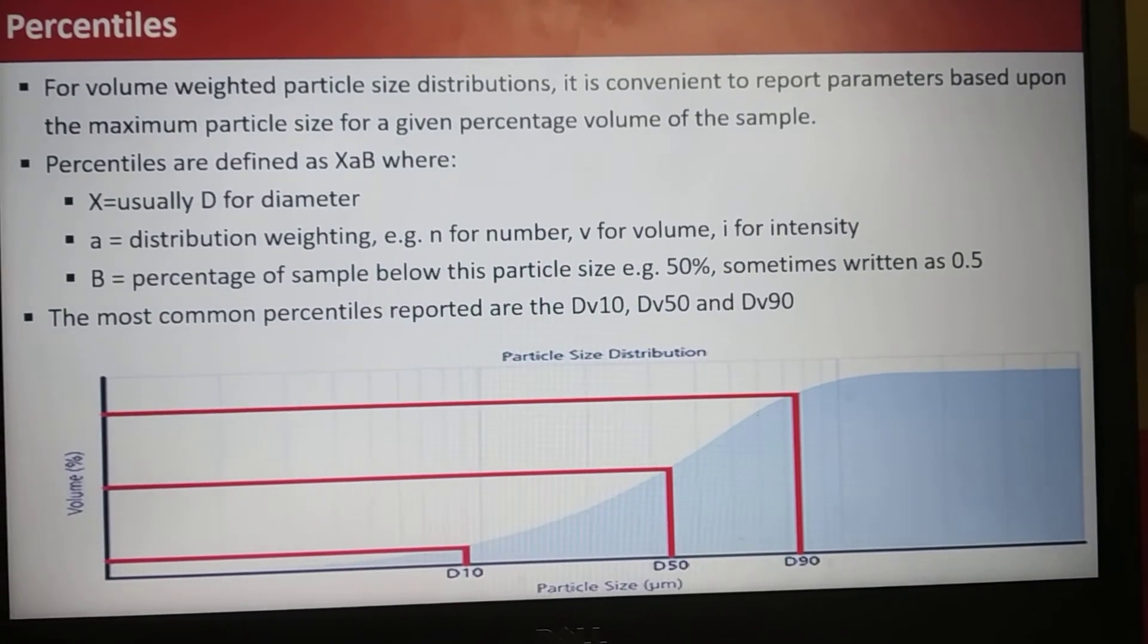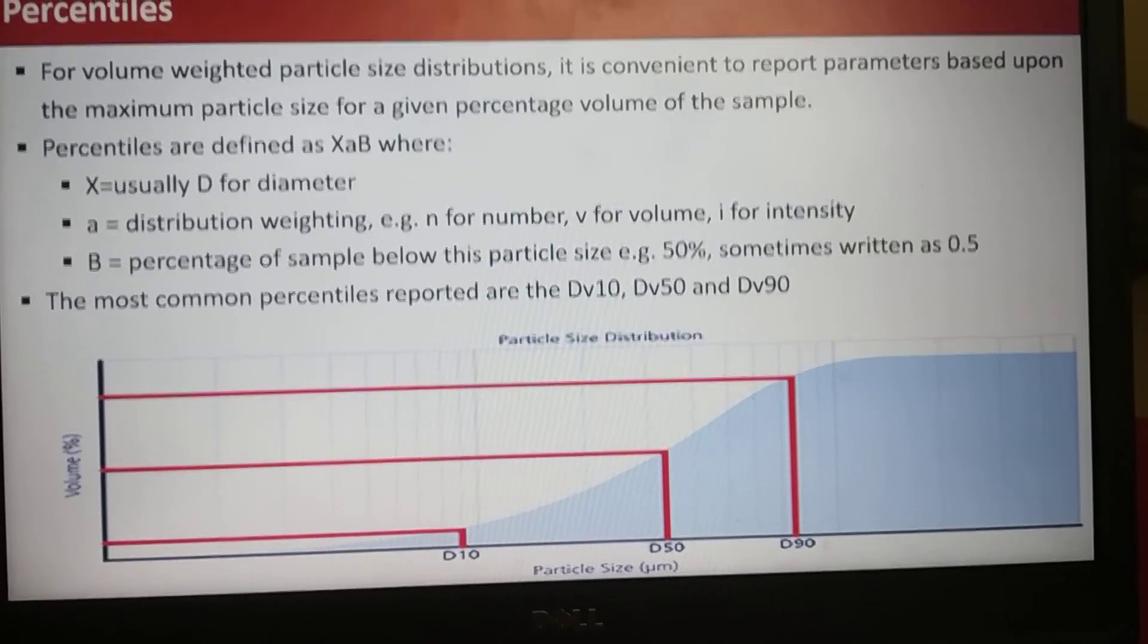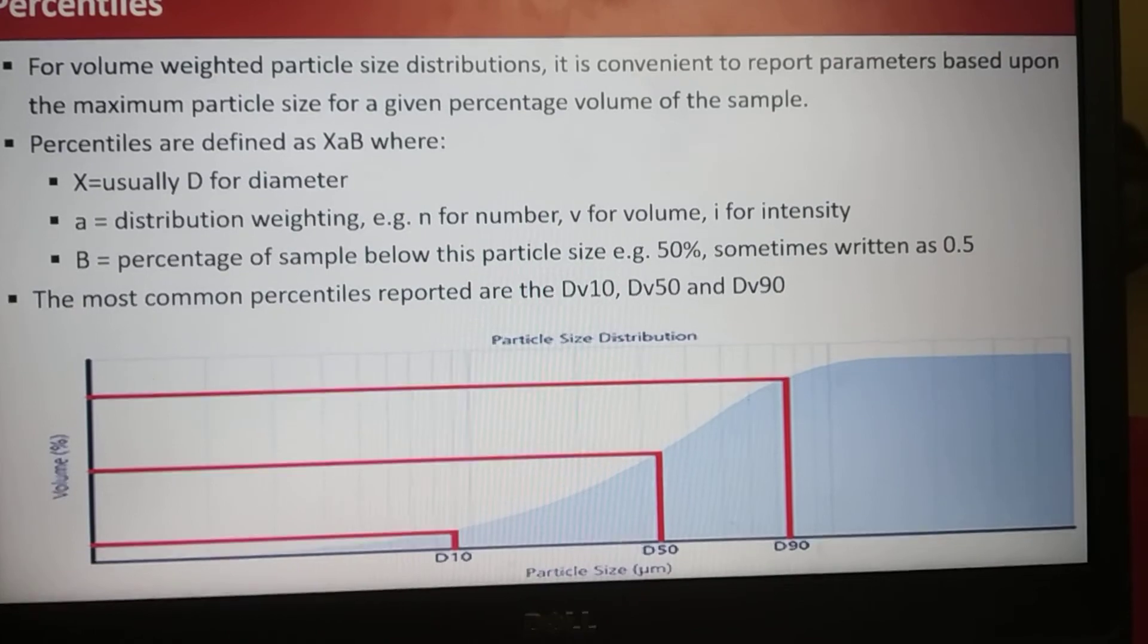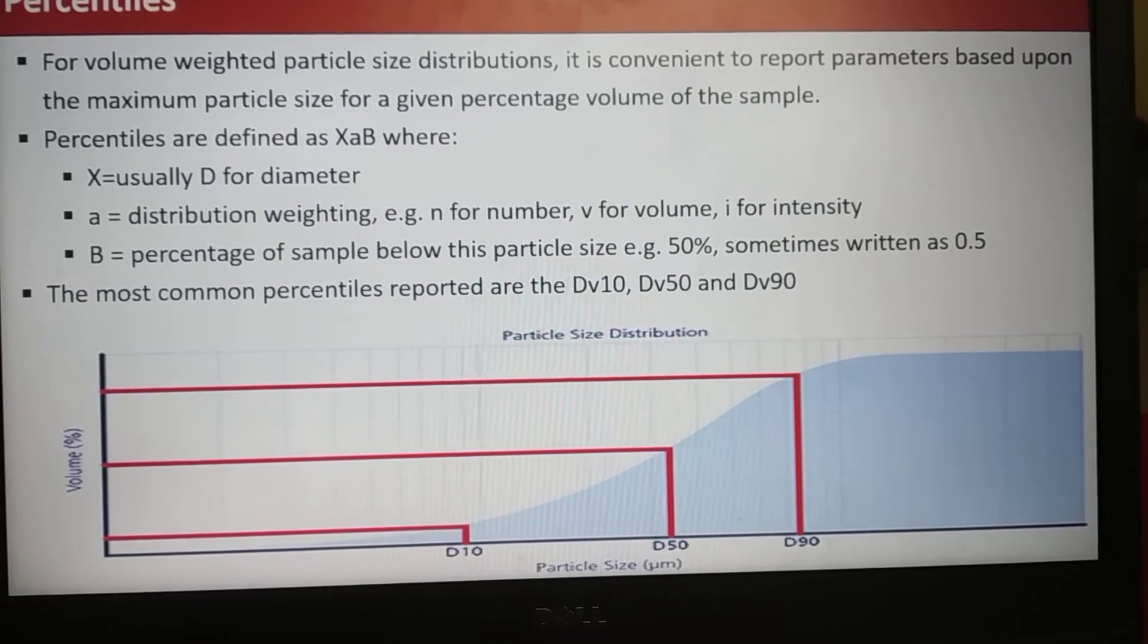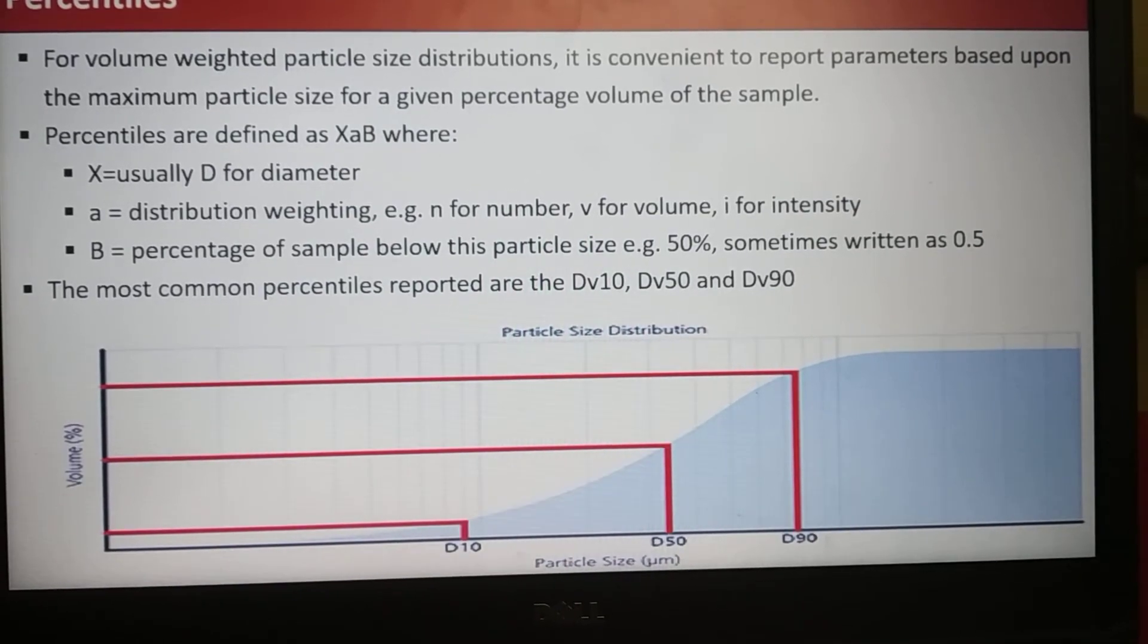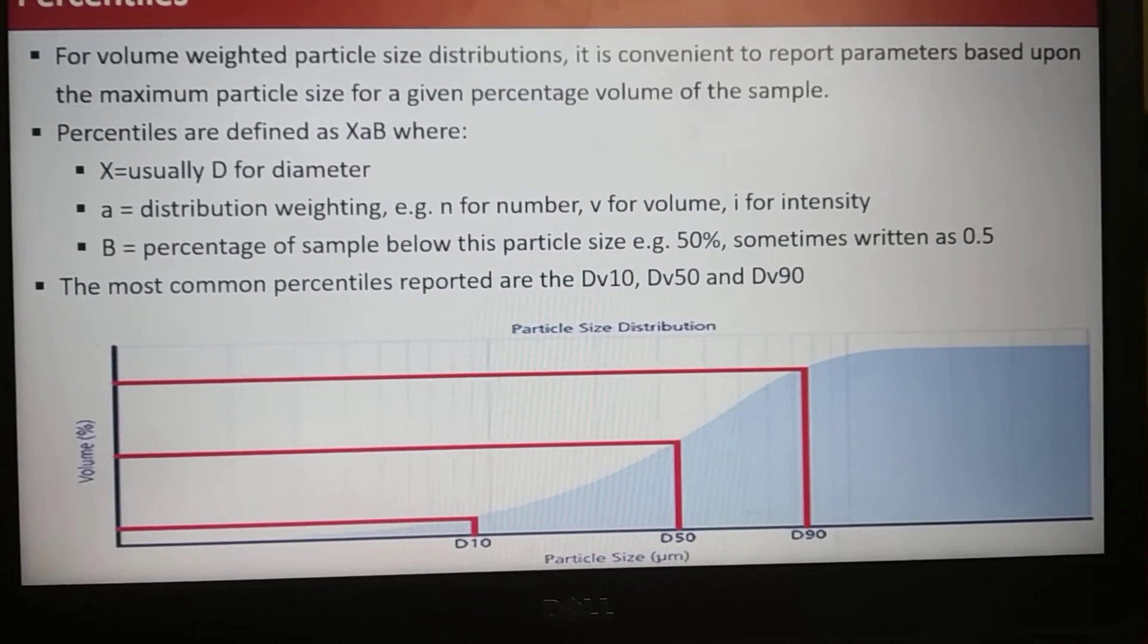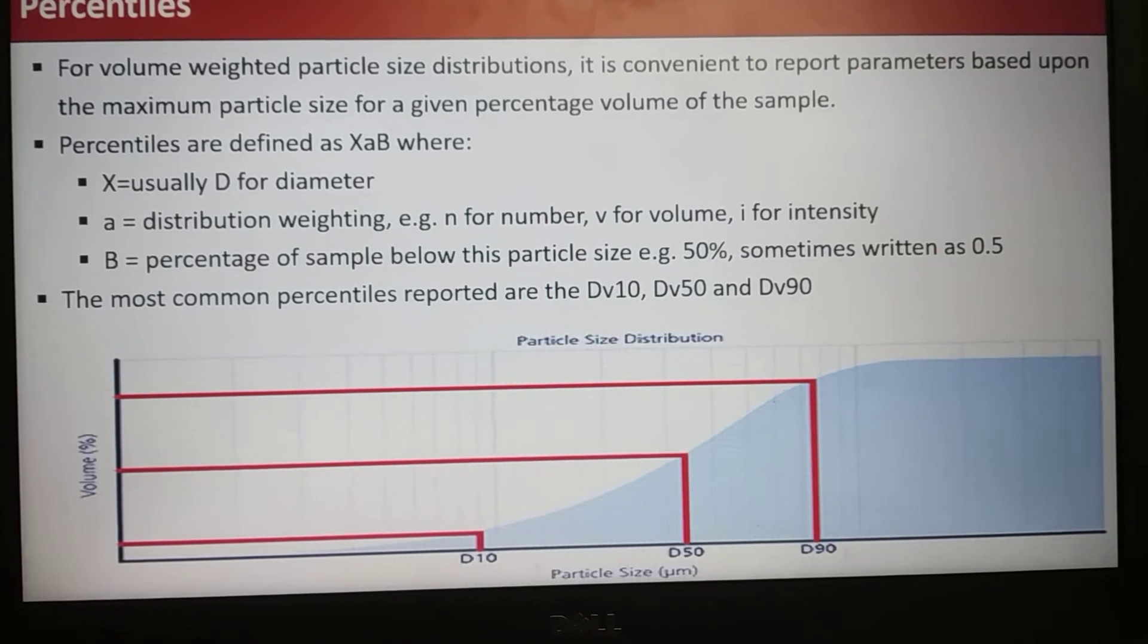Another statistic used to represent PSD data is percentiles. For volume-weighted particle size distribution, it is convenient to report parameters based upon the maximum particle size of a given percentile. The percentiles are defined as Xab, where X is usually D (that is diameter), A is distribution weighting (for example, N for number, V for volume, and I for intensity), and B is the percentage of sample below this particle size, for example 50%, which is also represented by decimal 0.5.